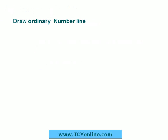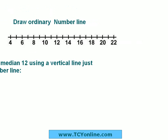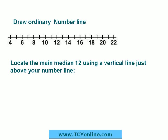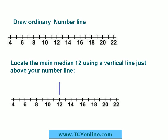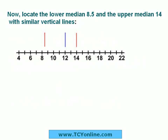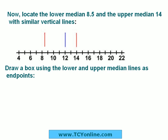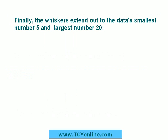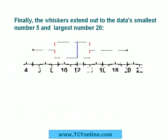First, draw an ordinary number line, then locate the main median 12 using a vertical line just above the number line. After this, locate the lower median 8.5 and upper median 14 with similar vertical lines. Now draw a box using the lower and upper median lines as endpoints. Finally, draw the whiskers extended out to the smallest number 5 and largest number 20. This is the final box and whisker plot for the given data.